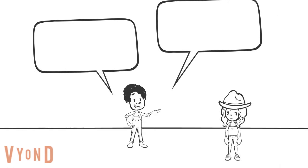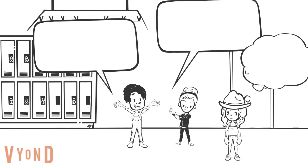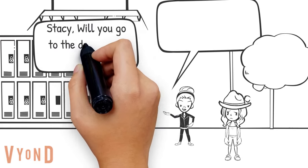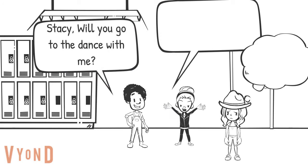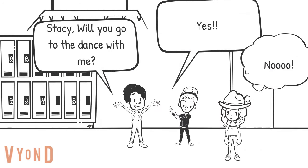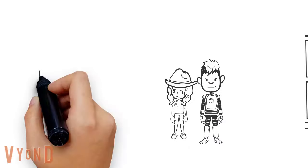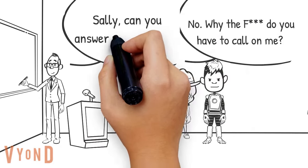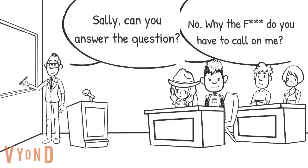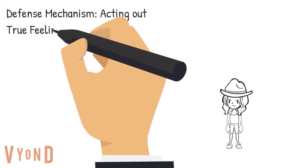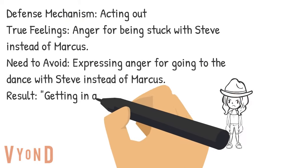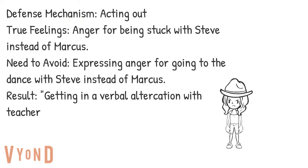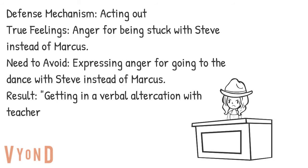Let's say that since Sally did not express her true feelings to Marcus, who may or may not have reciprocated, Marcus decides to ask Stacey to the dance and she says yes. Sally becomes angry that Stacey is going to the dance with Marcus and not her, so she ends up cursing at her teacher and getting into trouble. Acting aggressive instead of expressing your true feelings is a defense mechanism called acting out.